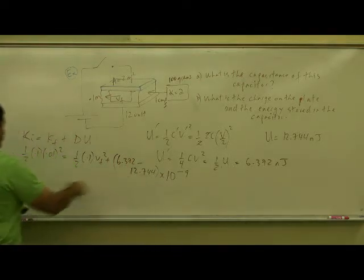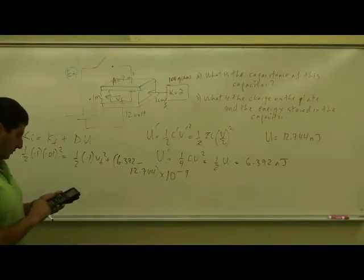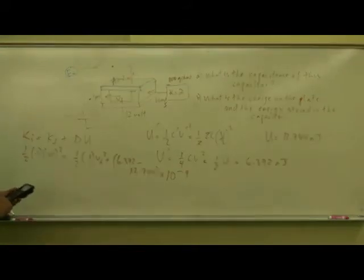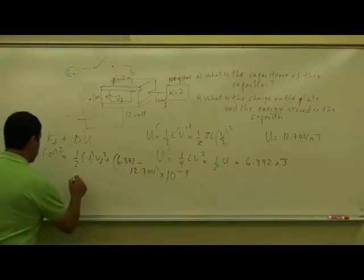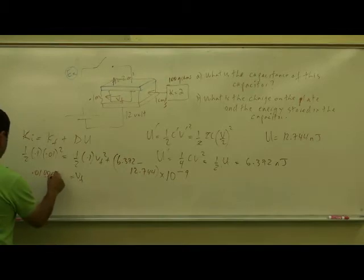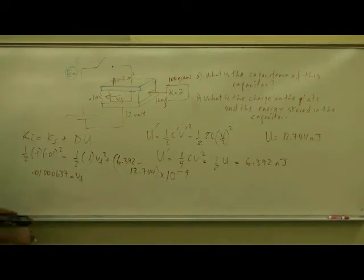And then you take the difference here, put it over here, plus 12.744 minus 6.372 times 10 to the power of negative 9, times 2 divided by 0.1 squared root.